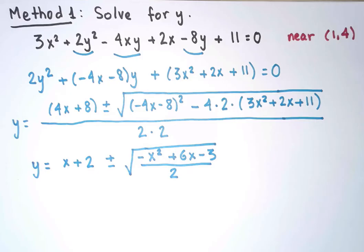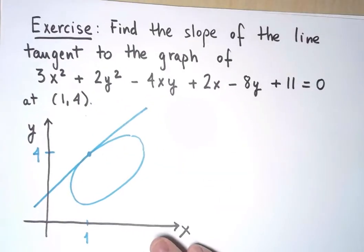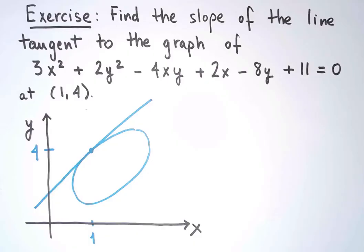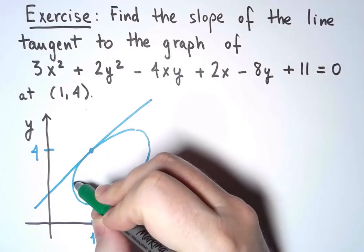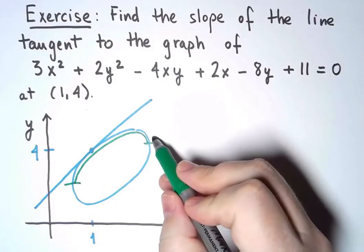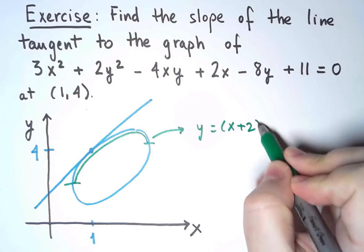And not surprisingly, I get a plus-minus, so I don't get a function. I get something that is multivalued. We knew this was going to happen. If I look at the graph, I can see where the plus and minus appear. If I were to only keep this part of the graph, the top part, then that corresponds to choosing the plus sign in the square root.